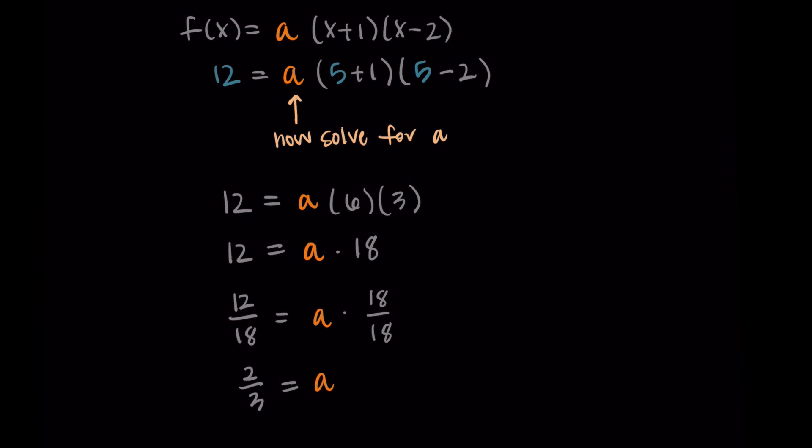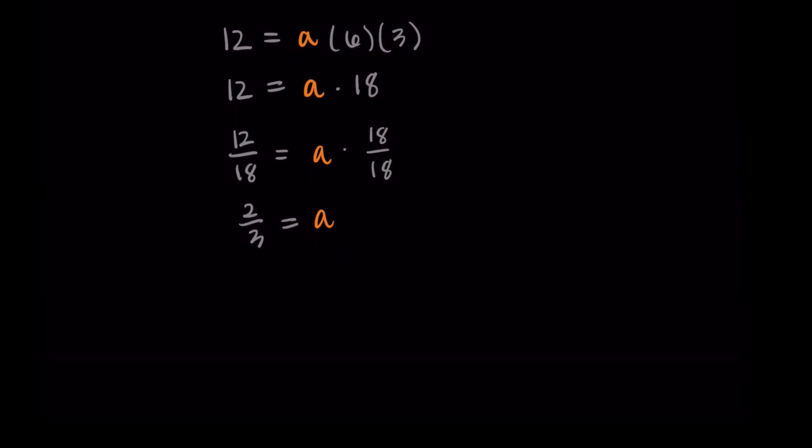So my a value is 12/18, which is 2/3. Okay, so we have my a value. It's 2/3. We just had to go through that process. It might take you a little bit. You can use your calculator, whatever you need. But the main idea is that we're substituting in a point and then solving for a.